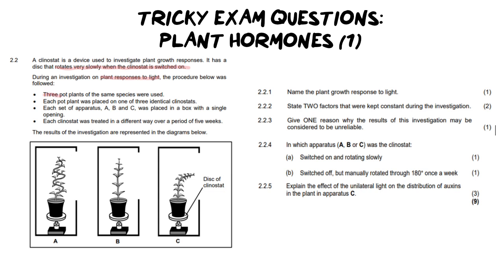The procedure was followed. There were three pots with the same species of plant. Each pot was placed on one of three identical clinostats. Each apparatus A, B, and C was then placed in a box with a single opening, and each clinostat was treated in a different way over a period of five weeks, with results shown in the picture. You should immediately identify which of those clinostats was moving and which wasn't. We have three separate outcomes, two easy to identify, and the third is a mixture of the two.